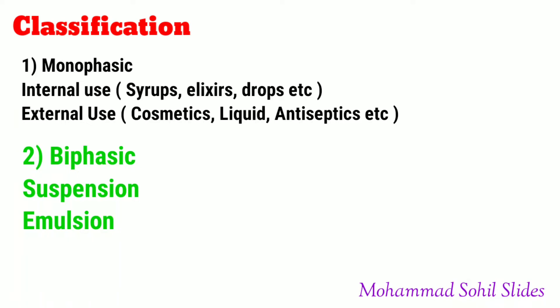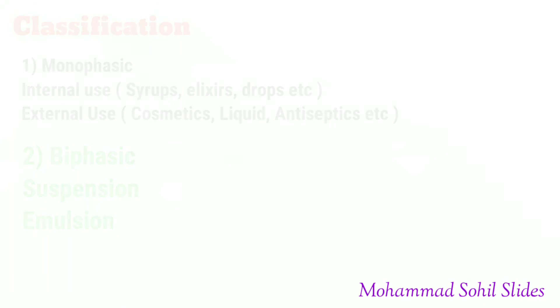Monophasic liquid dosage forms are further classified as for internal or external use. Internally we use syrup, elixir, linctus, and drops. Externally we use cosmetic liquids, antiseptics, etc. Biphasic liquid dosage forms basically include suspension or emulsion.